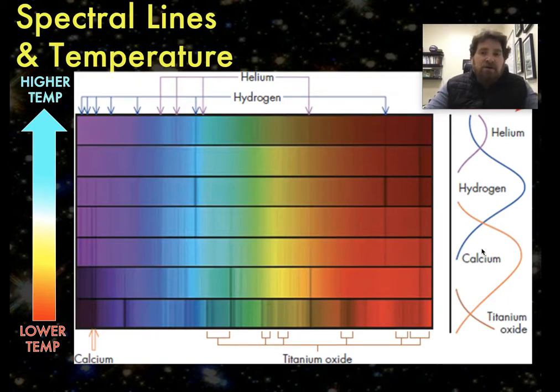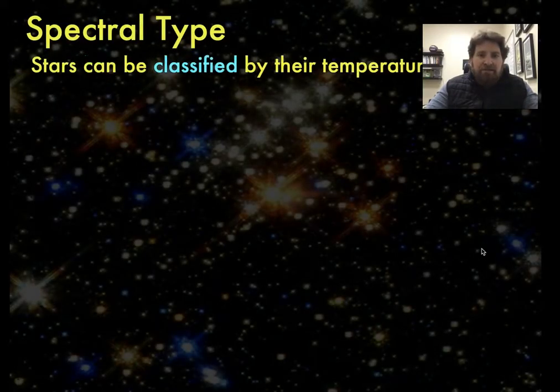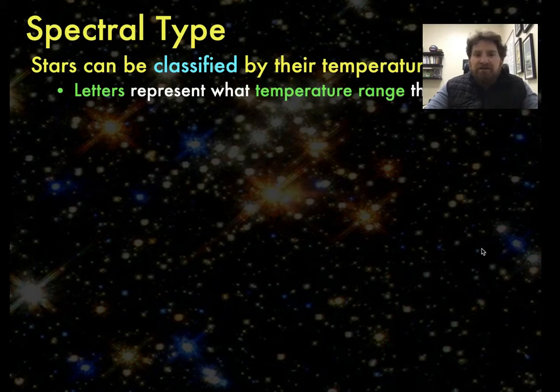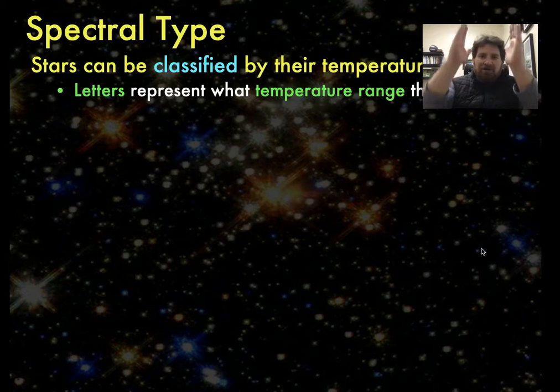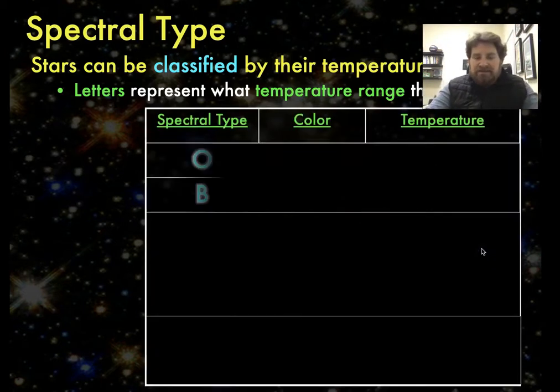These came to be known as spectral classes or spectral types. So the spectral type of a star is classified by their temperature using letters to represent a range of temperatures that a star in that particular class or type will have.